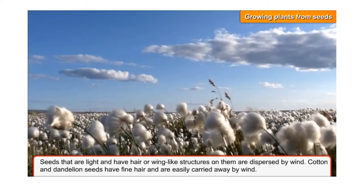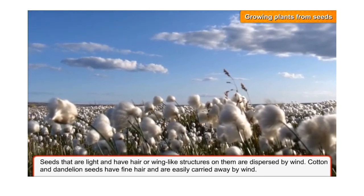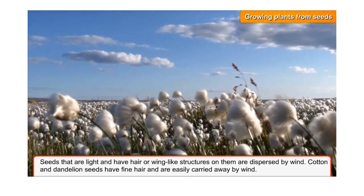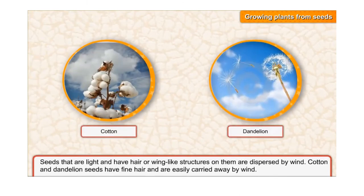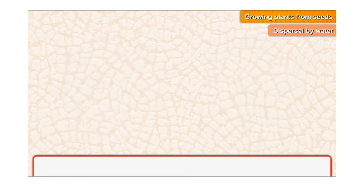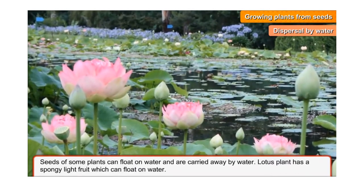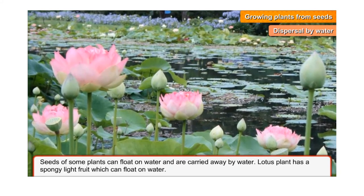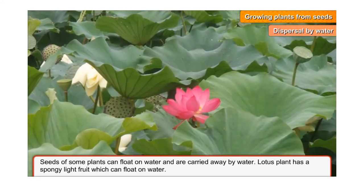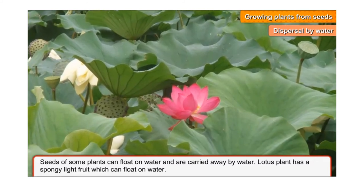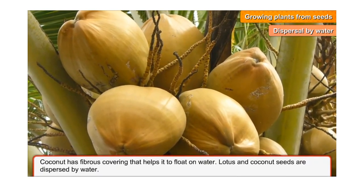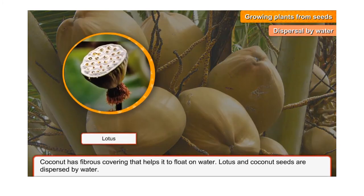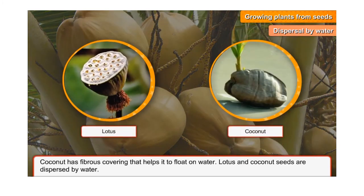Dispersal by wind: Seeds that are light and have hair or wing-like structures are dispersed by wind. Cotton and dandelion seeds have fine hair and are easily carried away by wind. Dispersal by water: Seeds of some plants can float on water and are carried away by it. The lotus plant has a spongy, light fruit which can float on water. Coconut has a fibrous covering that helps it float on water. Lotus and coconut seeds are dispersed by water.